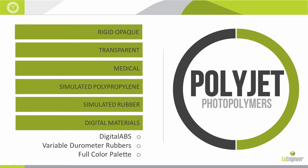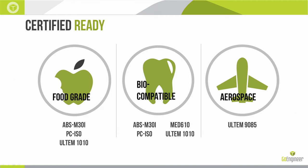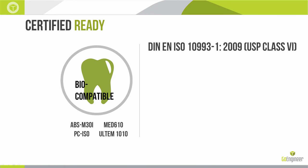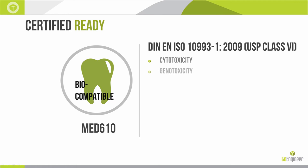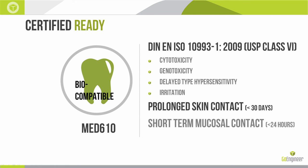Within those material sets, several groups are ready to be certified. The biocompatible category includes ABS-M30i, PC-ISO, MED-610, and ULTEM-1010, all of which are ISO-10993 certified and USP Class VI compatible. MED-610, for example, meets standards for cytotoxicity, genotoxicity, delayed-type hypersensitivity, and irritation — four standards under ISO 10993.